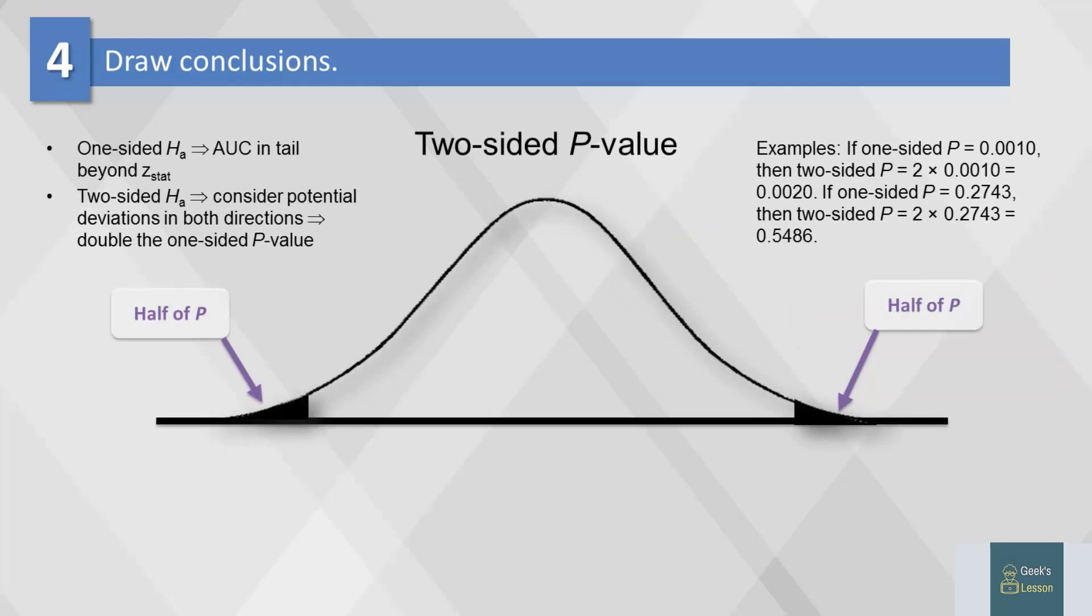Note that when we're looking at weight change instead of weight increase, all we have to do is multiply the one-sided p-value by 2 to do a two-tailed test.